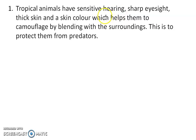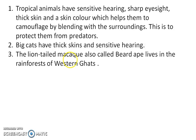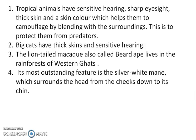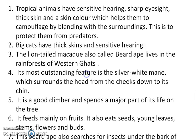Tropical animals have sensitive hearing — they can hear minute sounds and if an unnatural sound disturbs them, they can give warnings to other animals. They have sharp eyesight, thick skin, and their skin color can camouflage or blend with the background, helping them attack prey or protect themselves from predators. There are also big cats with thick skin and sensitive hearing. The lion-tailed macaque, also called the beard ape, lives in the Western Ghats of India and has a distinctive white-silver mane surrounding its cheeks. It is a good climber, lives mostly on trees, and feeds on fruits, buds, flowers, stems, and leaves, and also searches for insects living on the bark of trees.